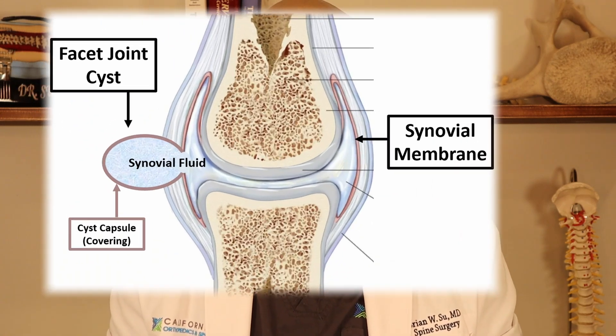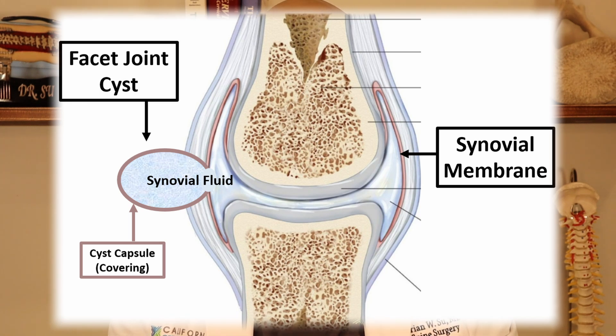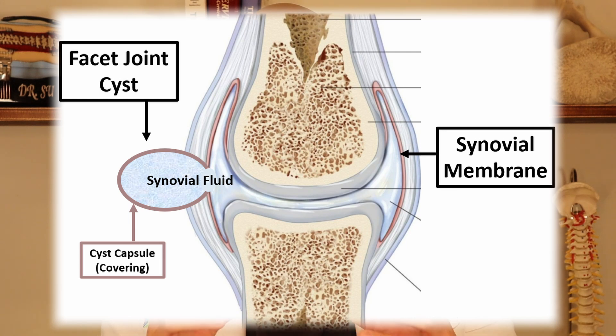So what can happen if there's arthritis with more synovial fluid being made, or spondylolisthesis with abnormal motion? That capsule can stretch, more synovial fluid is produced, and what ends up happening is the synovial membrane out-pouches and forms a fluid-filled cyst. The fluid is synovial fluid, and that cyst comes outside of the joint, usually encapsulated by a little cyst covering.